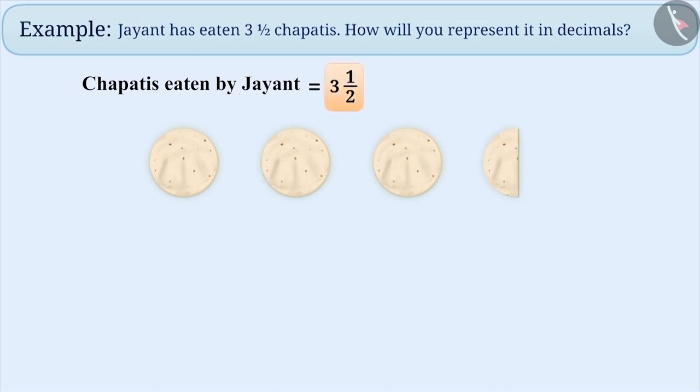Here, 3 1 by 2 is a fraction. We can also obtain the decimal form of 3 1 by 2 in the following way. Since there are three wholes and one half in 3 1 by 2, we can write it as 3 plus 1 by 2.